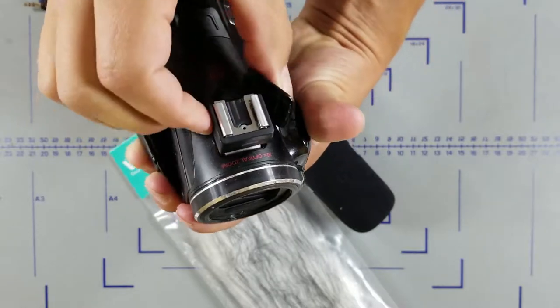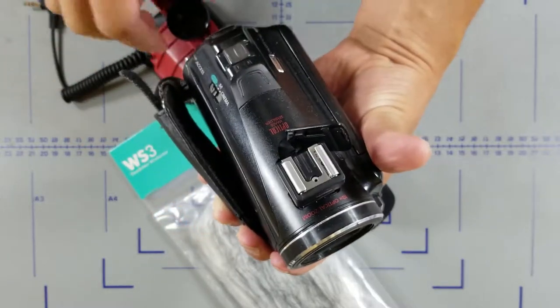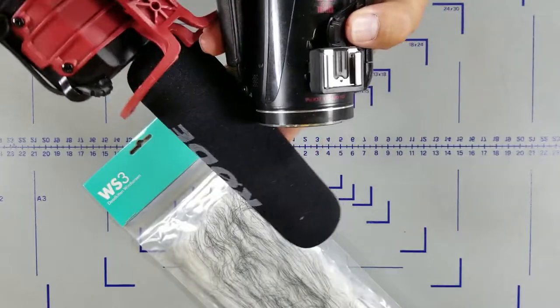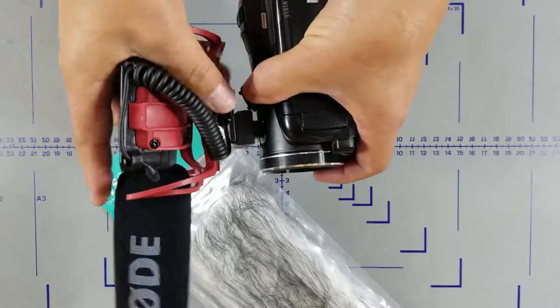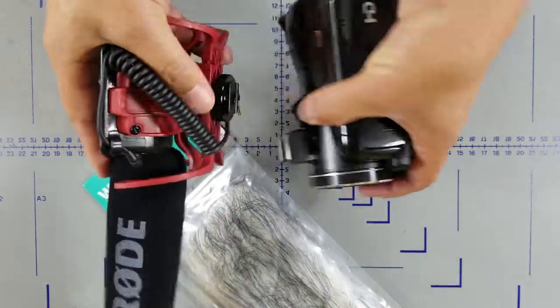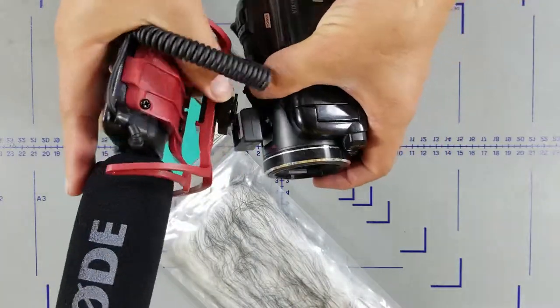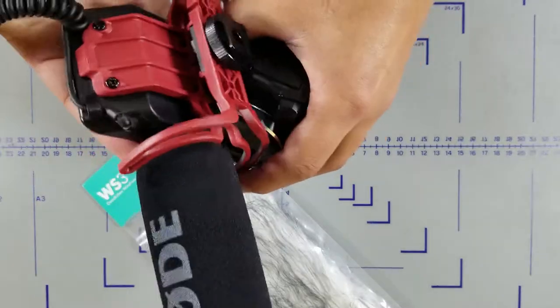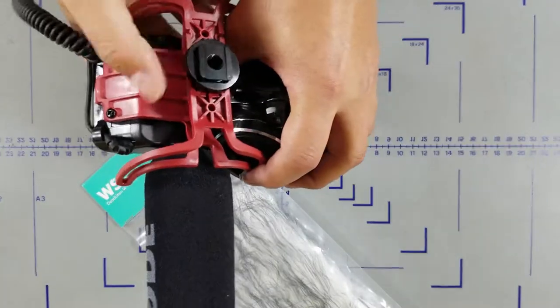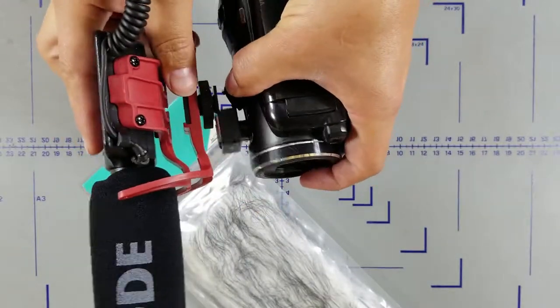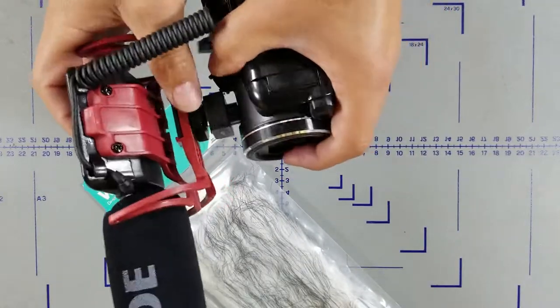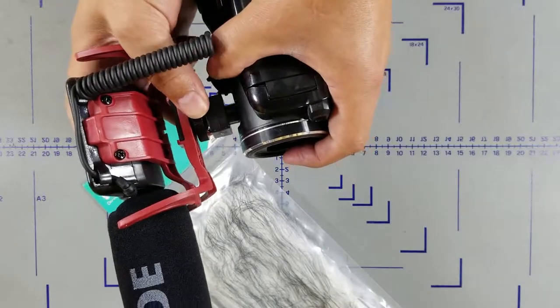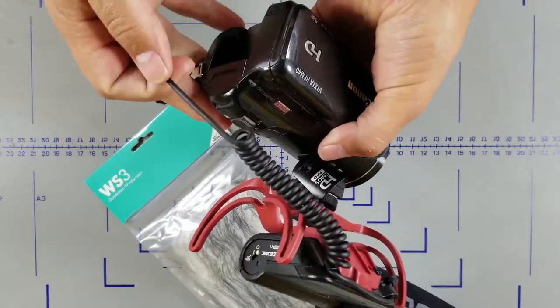Alright. Feels very snug. Throw the Rode microphone on. Slides in place. Dial down. Okay.